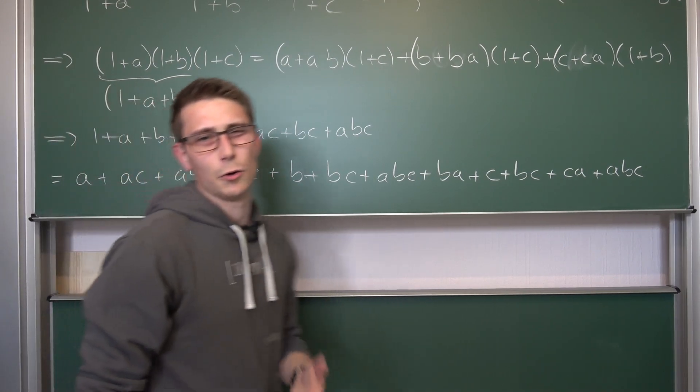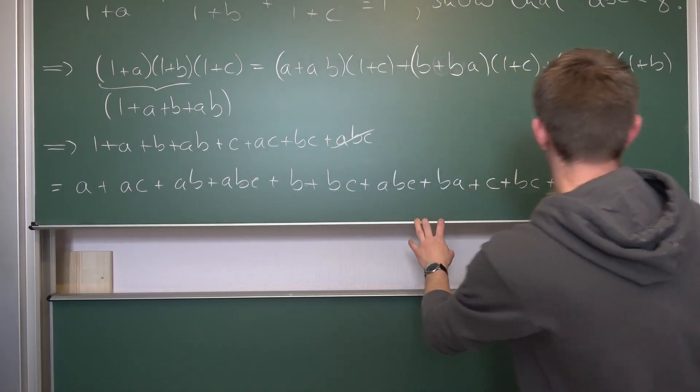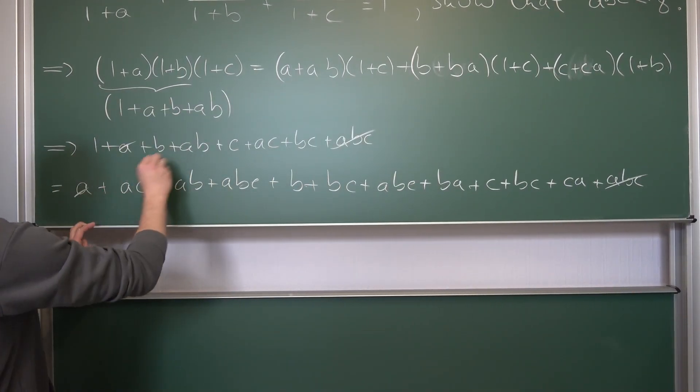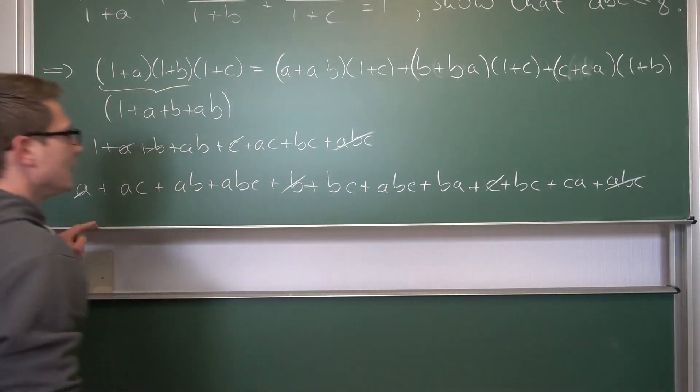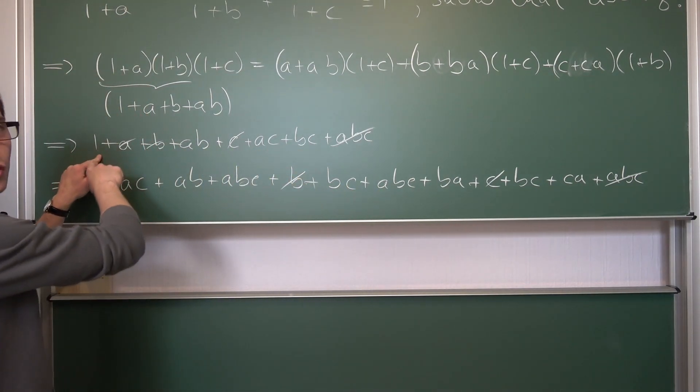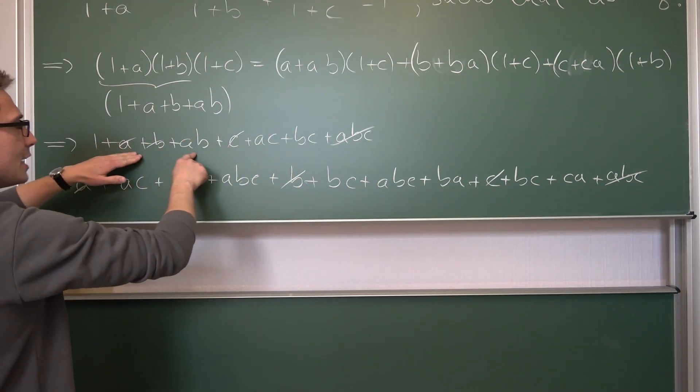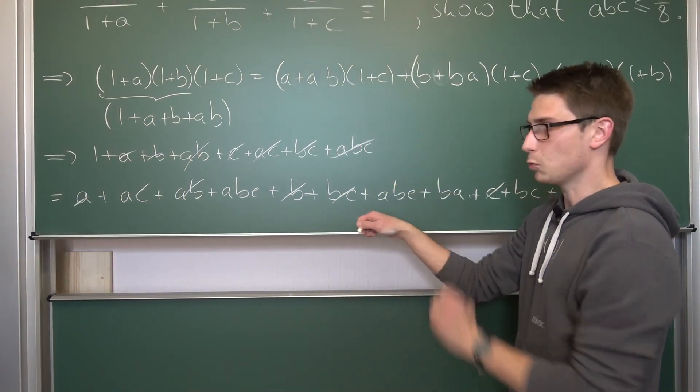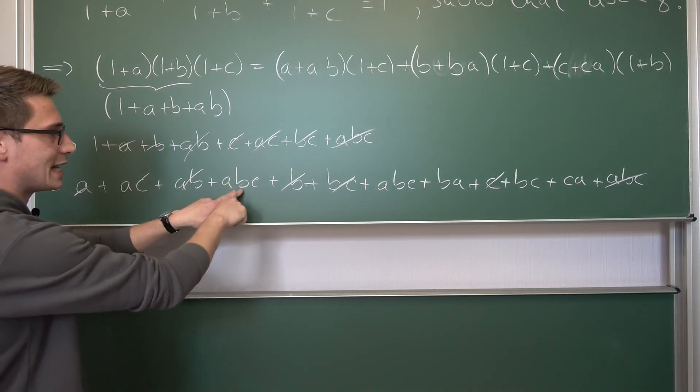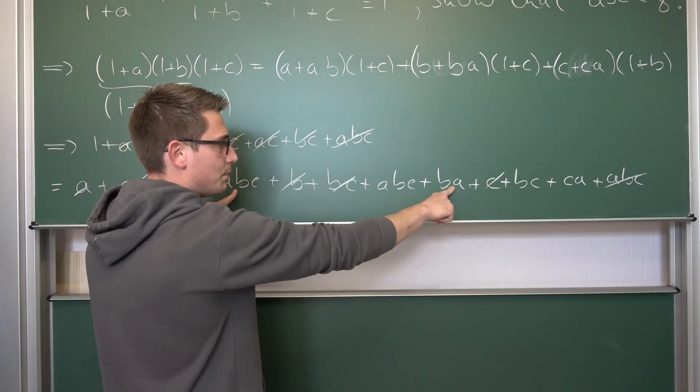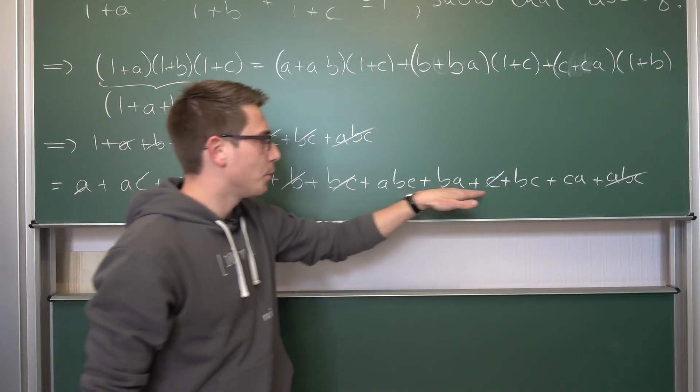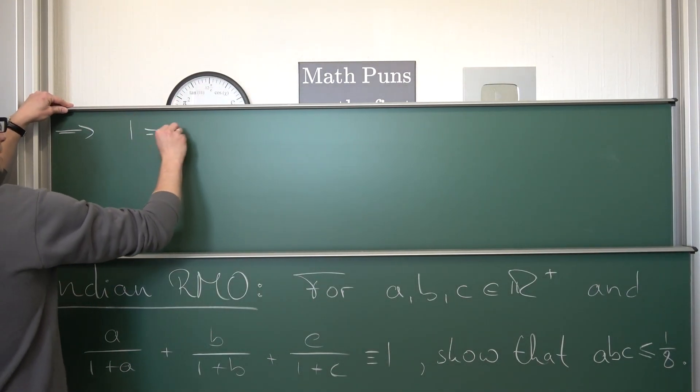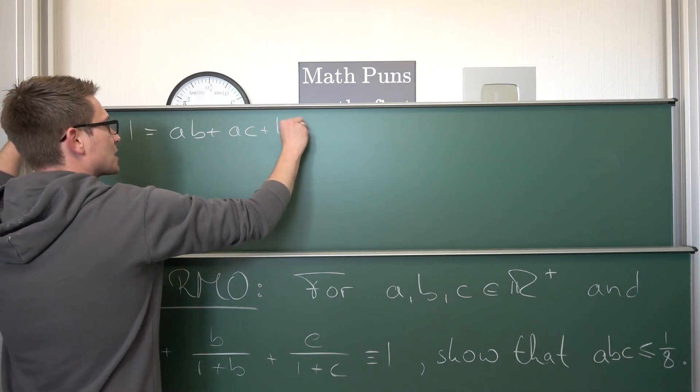And now let us start cancelling stuff out on both sides. We got a summand of abc on both sides. Let's get rid of this one at first. Also a, b, and c can be cancelled out on both sides. And we got ab, ac, and bc down here too. Except for the 1. The 1 is not going to be preserved down here. So the left hand side is equal to 1 and all the other ones are going to cancel out.